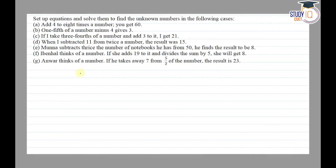Hello everyone. This question appears in Class 7th NCERT chapter of Simple Equations. This is the first question of Exercise 4.4. The question says: set up equations and solve them to find the unknown numbers in the following cases. The first part is: if you add 4 to 8 times a number, you get 60. So the required number is x.